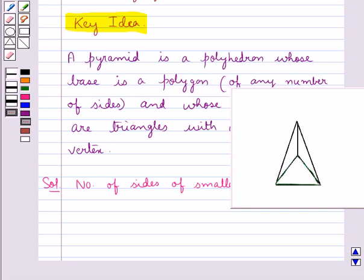That is the smallest polygon. Now on each edge of this base we have one lateral face: this is one lateral face, this is another lateral face, and this is another lateral face. So in all we have three lateral faces and one base, so in total we have four faces in this polyhedron, that is, the pyramid.